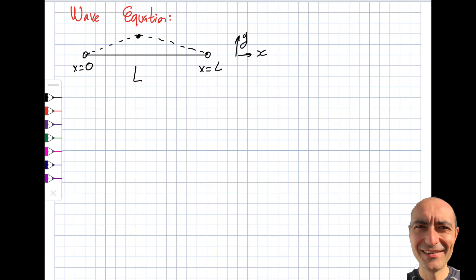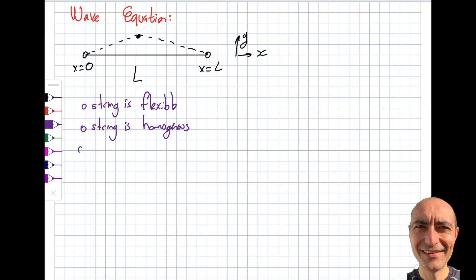I need to assume that the vibration is in the x-y plane, so the displacement is perpendicular to the x-axis — this is called transverse vibration. I need to make a couple of assumptions. The string is flexible, and the string is homogeneous, which is very similar to the heat equation where I assumed the rod was homogeneous.